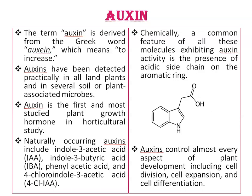Naturally occurring auxins include indole-3-acetic acid (IAA), indole-3-butyric acid (IBA), phenylacetic acid, and 4-chloroindole-3-acetic acid. Of all these, indole-3-acetic acid (IAA) is the most extensively studied auxin.